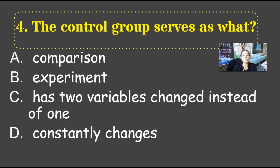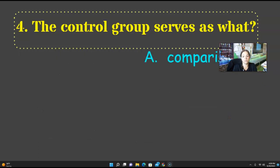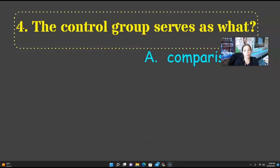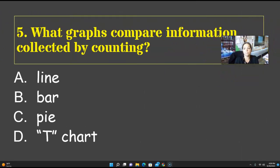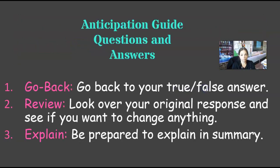The control group serves as what? Comparison, experiment, two variables change instead of one, or constant changes. This one is going to be the comparison. So control compares, control compare. Five. What graphs compare information by counting? That one is going to be your bar graph.